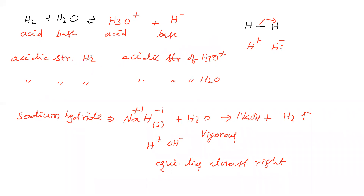Only backward is taking place means backward is dominant and forward is nil. That indicates the hydronium ion has higher acidic strength compared to hydrogen. Also, hydrogen is not donating H⁺ to water; water is not acting as base — meaning acidic strength of water is greater than that of hydrogen. That's why hydrogen is unable to give H⁺ to water.